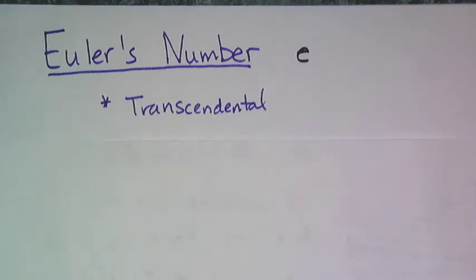E is a transcendental number, which means it's irrational but it was not created by a square root or a cube root or any of the other roots. So it belongs to the same family as pi.